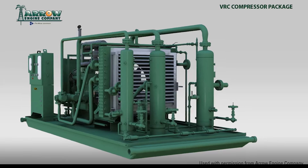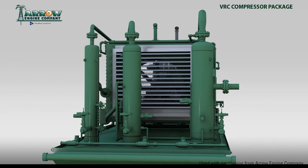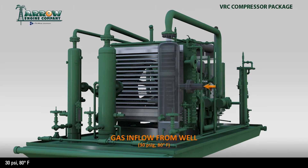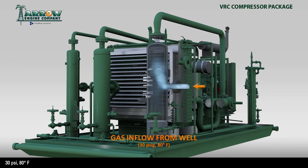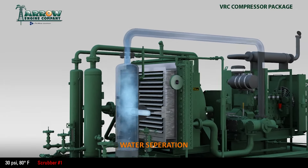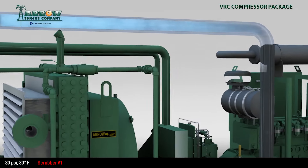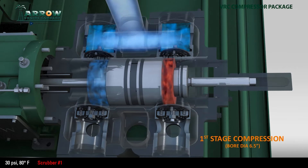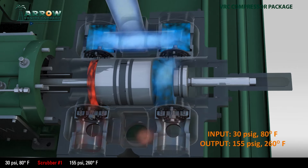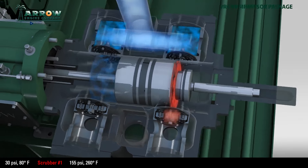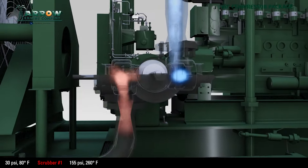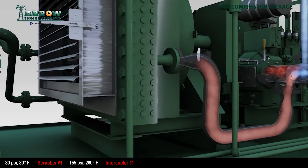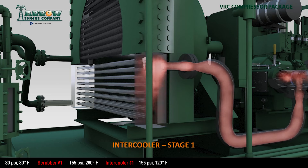This video shows the inner workings and the flow path of a three-stage reciprocating compressor. The inlet flow, or suction side, starts at 30 PSI and 80 degrees. It enters the inlet scrubber and any free liquids fall out. At the first stage of compression, the pistons will compress the gas to 155 PSI and the temperature will increase to 260 degrees. As it exits the first stage, it goes into the intercooler, which cools the gas down to 120 degrees.